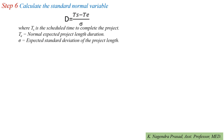The next step is to calculate the standard normal variable: Z = (TS - TE) / sigma. Here, TS is the scheduled time to complete the project, which is 40 days. TE is the expected project duration, which is 36 days. Sigma is the standard deviation, which is 5. Substituting: Z = (40 - 36) / 5 = 0.8.